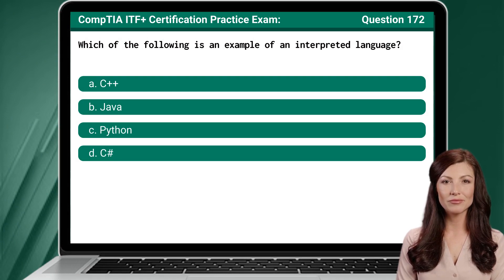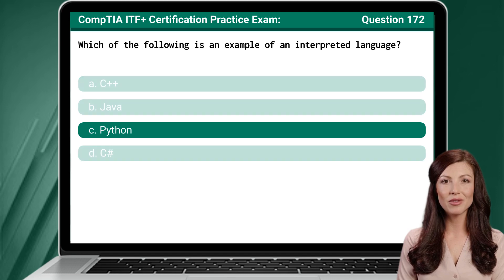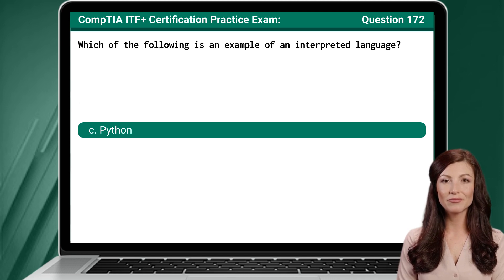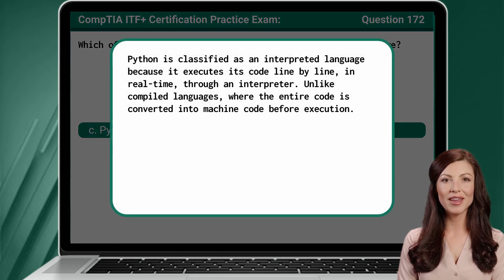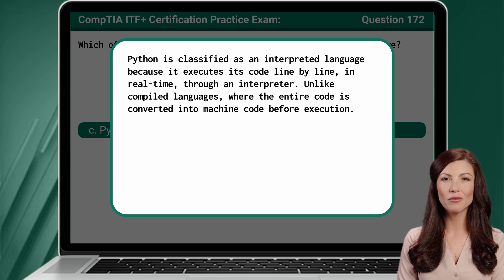Question 172: Which of the following is an example of an interpreted language? The answer is C, Python. Python is classified as an interpreted language because it executes its code line by line, in real time, through an interpreter. Unlike compiled languages, where the entire code is converted into machine code before execution.